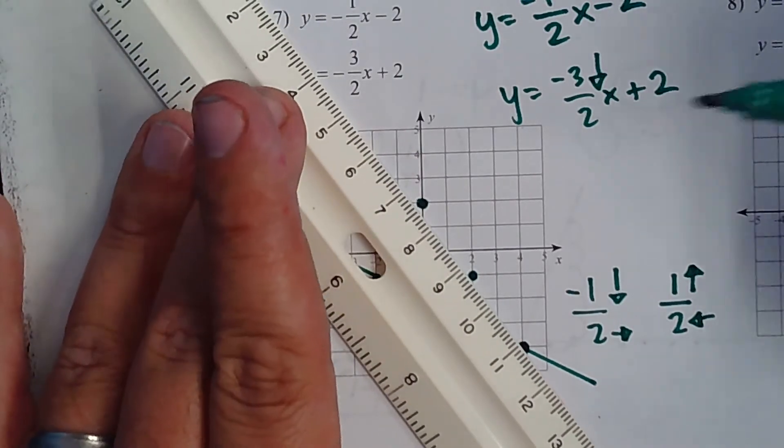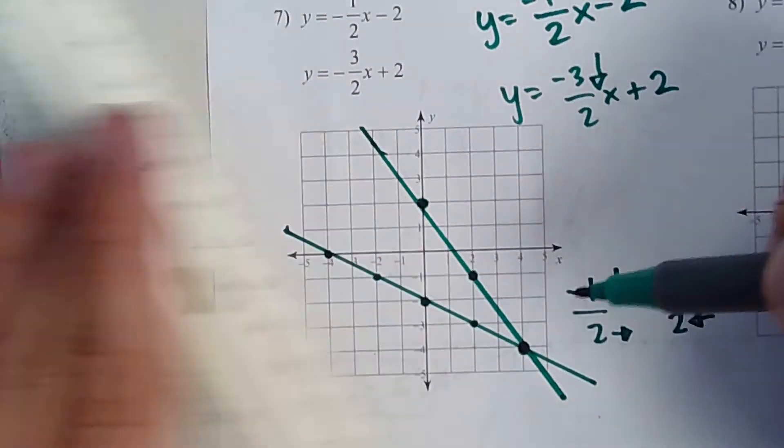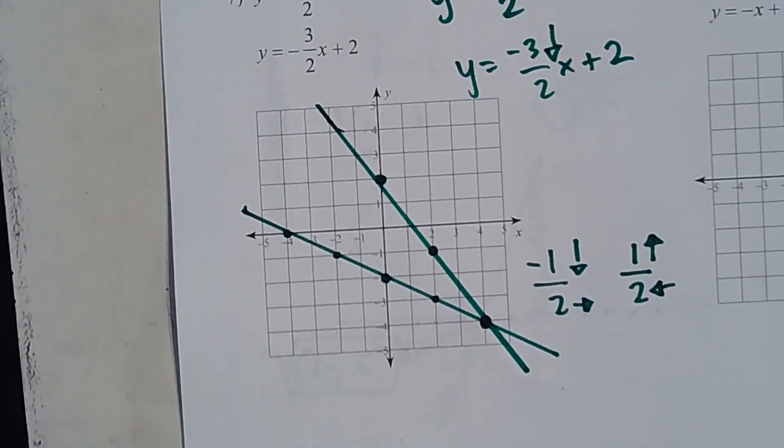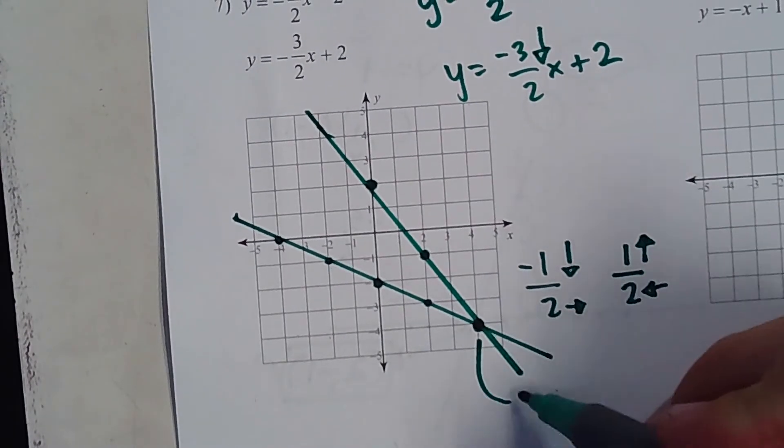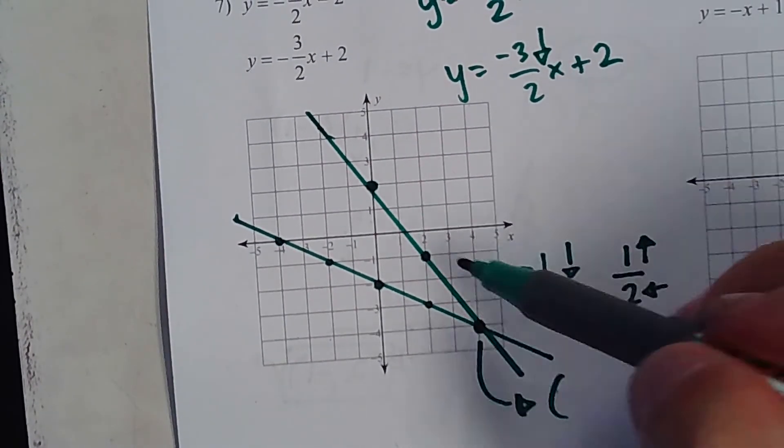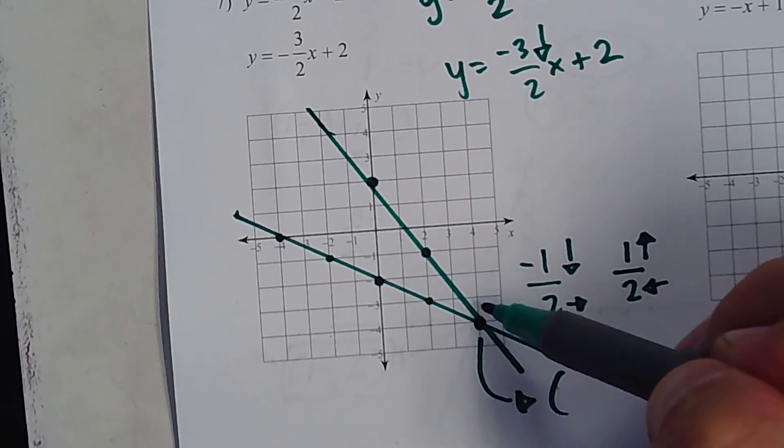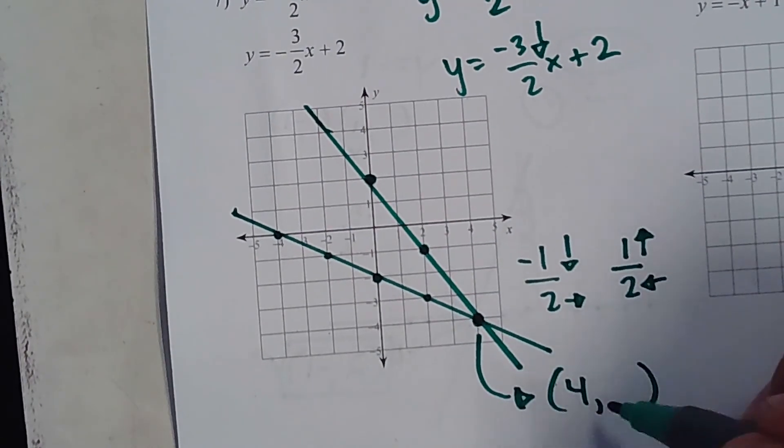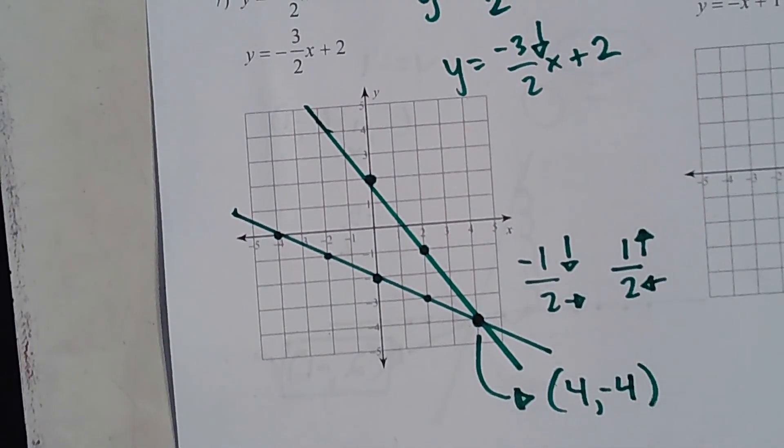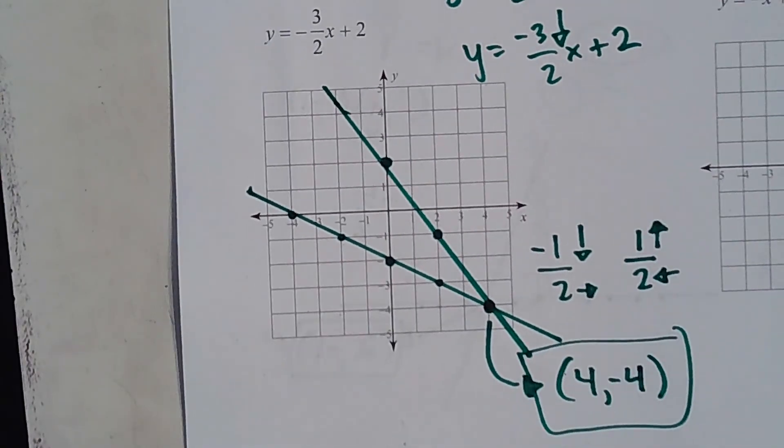And that was a tough one because it was off the line a little bit. So, where is this point at? Your answer would be over 4, down 4. Over 4, down 4. All right? Do the best you can on the rest of it.